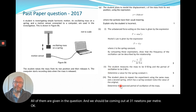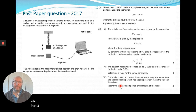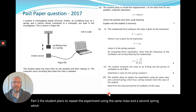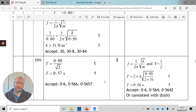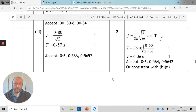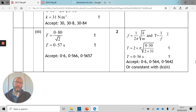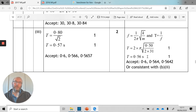Part (d): the student repeats the experiment using the same mass and a second spring with a spring constant twice the original value. To determine the expected period of oscillation, use the equation already derived and plug in two times the spring constant, which gives a period of oscillation of 0.56 seconds.